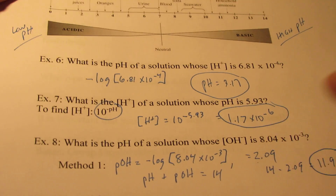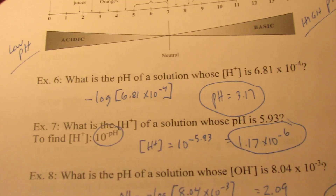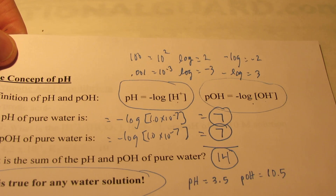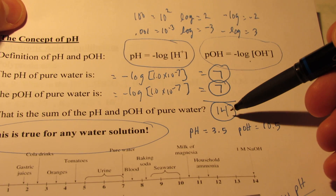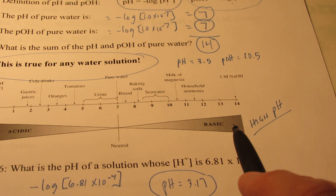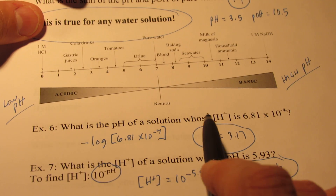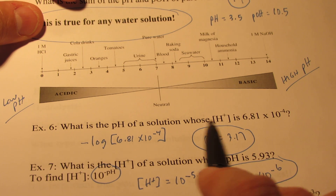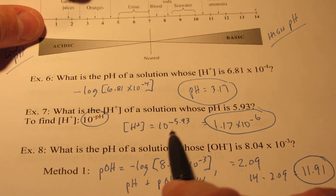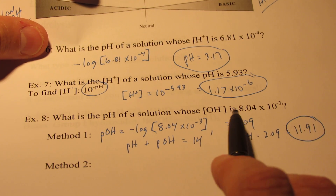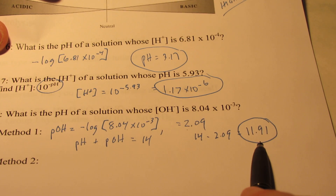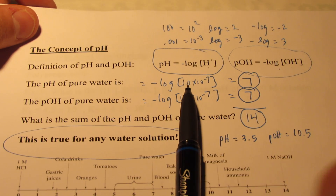To summarize: pH is the negative log of the hydronium ion concentration, and pOH is the negative log of the hydroxide ion concentration. The sum of the two always equals 14. A low pH is acidic; a higher pH means more basic. To find pH from H⁺ concentration, take the negative log. To find H⁺ from pH, use 10 to the negative pH. If given OH⁻ concentration, find pOH first, then subtract from 14 to get pH. That's good enough for part two — I'll pick up with part three shortly.